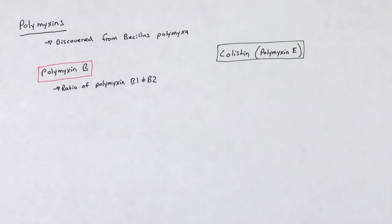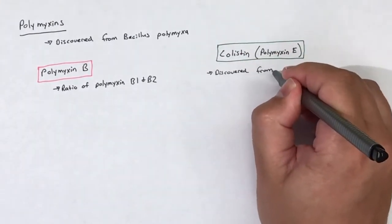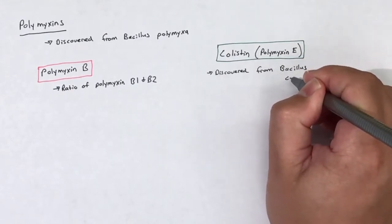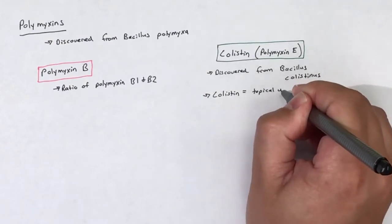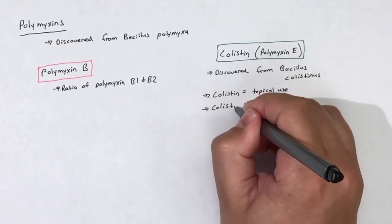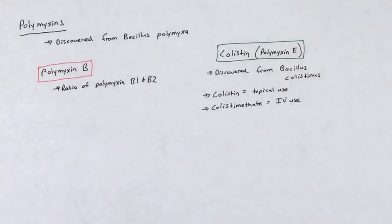Colistin is the name given to polymyxin E when it is used for topical use and the name changes to colistomethate when polymyxin E is used intravenously. An easy way to remember that both colistin and colistomethate are polymyxins is to remember that polymyxin E was discovered from Bacillus colistinus.